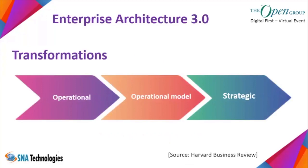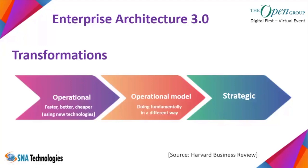Now coming to EA 3.0. A Harvard professor categorized digital transformations into three types: operational — bringing operational efficiency using new technologies to make things faster, better, and cheaper using SMACKIT technologies; operational model — doing something fundamentally differently, like Netflix moving from distributing DVDs to streaming online, changing both technology and the business model; and strategic — completely changing the essence of the company by crossing business domain boundaries.